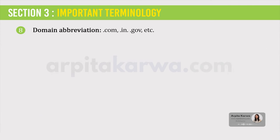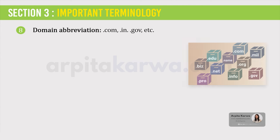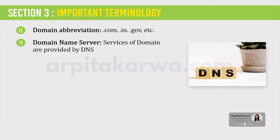The next service is domain abbreviation. For example, in www.arpitakarva.com, '.com' is the domain abbreviation. Other examples can be .gov, .edu, .in, .org, etc. Lastly, domain name servers are what provide the service of domains.